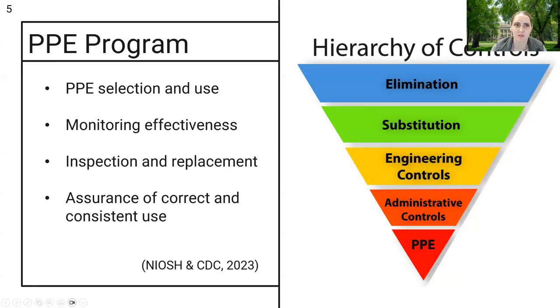Now when we're thinking about PPE, perhaps some people have seen this hierarchy of controls before. It's kind of our last line of defense against a workplace hazard. We start with elimination and PPE should really be the last thing that we think about. When you use PPE, you need to have a PPE program. This includes the selection and use of PPE, monitoring the effectiveness of the PPE, inspection and replacement, and assurance of correct and consistent use.